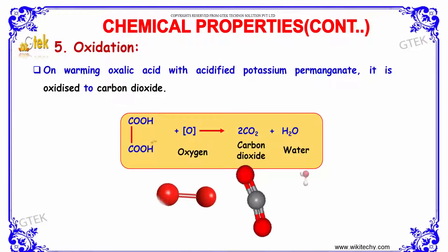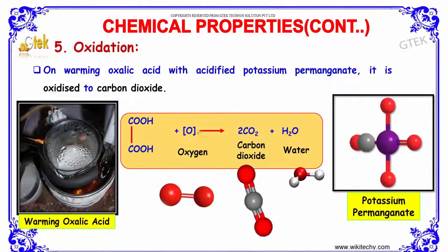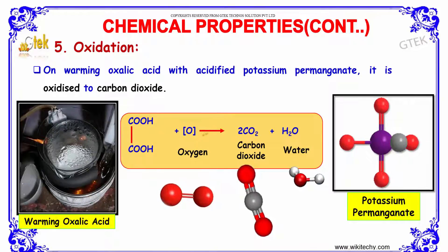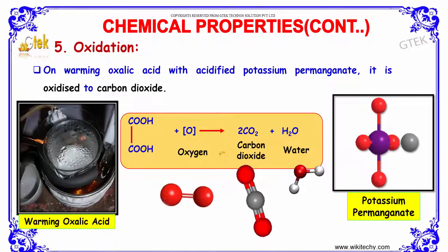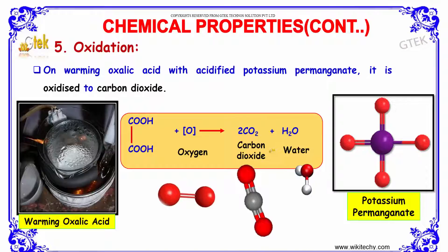On warming oxalic acid with an oxidizing agent, that is when it is oxidized in the presence of potassium permanganate, it forms carbon dioxide and water.